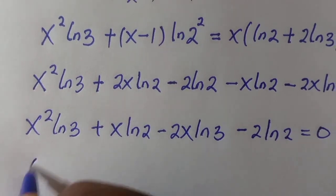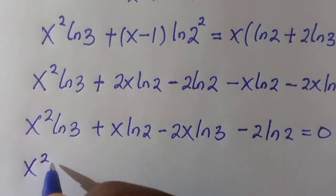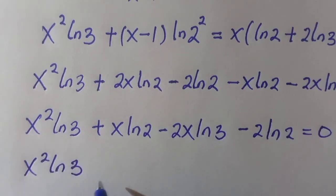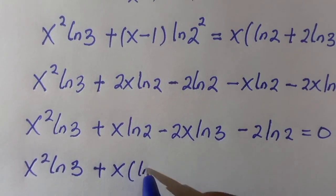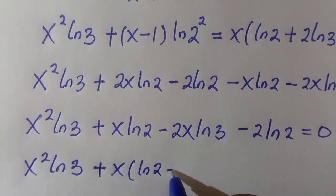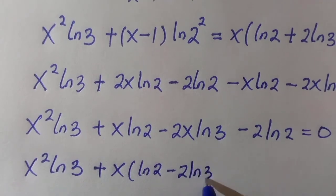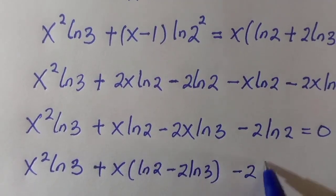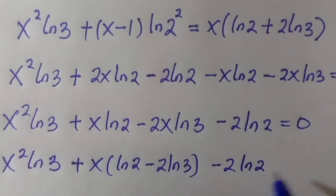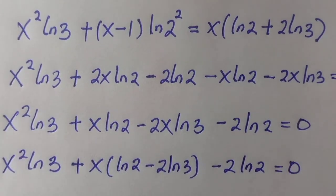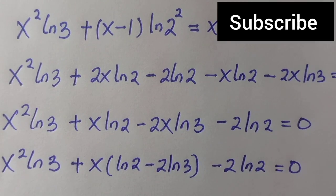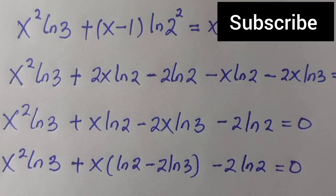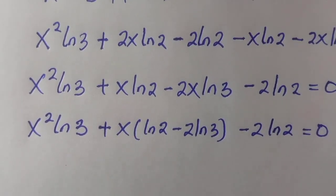By factoring out x in the linear terms, we get x squared ln 3 plus x(ln 2 minus 2 ln 3) minus 2 ln 2 equals 0. This is a quadratic equation because we have the term in x squared, a term in x, and a constant term. We are able to solve this by applying the quadratic formula.